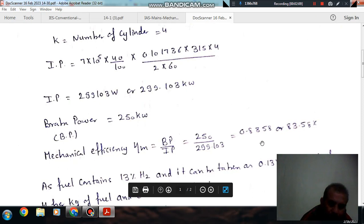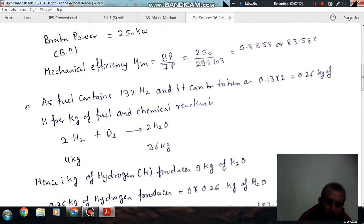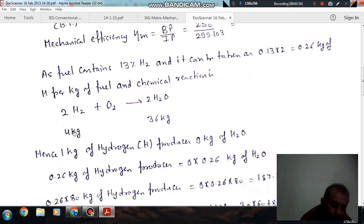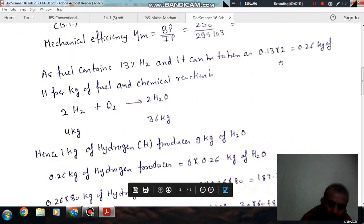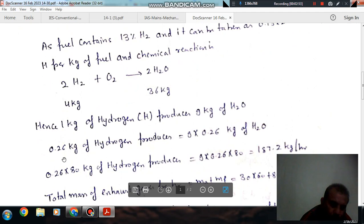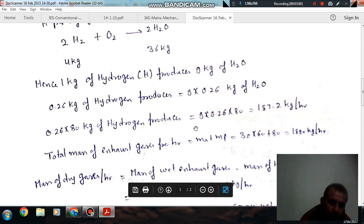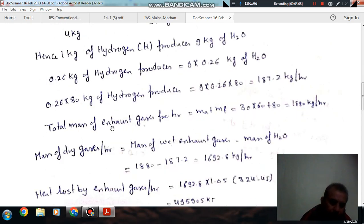As fuel contains 13 percent H2, so it can be taken as 0.13 into 2 or 0.26 kg of H per kg of fuel. The chemical reaction involving hydrogen is 2H2 plus O2 leads to 2H2O. It means 4 kg of H produces 36 kg of H2O, hence 1 kg produces 9 kg. Now the hydrogen quantity is 0.26 kg per kg of fuel, so 0.26 kg of hydrogen produces this much. Total mass of fuel is 80 kg per hour.